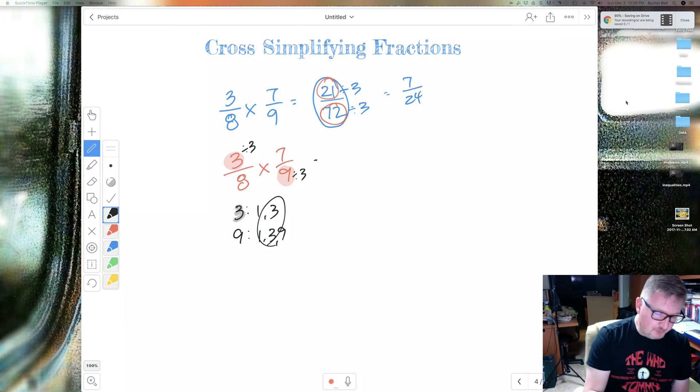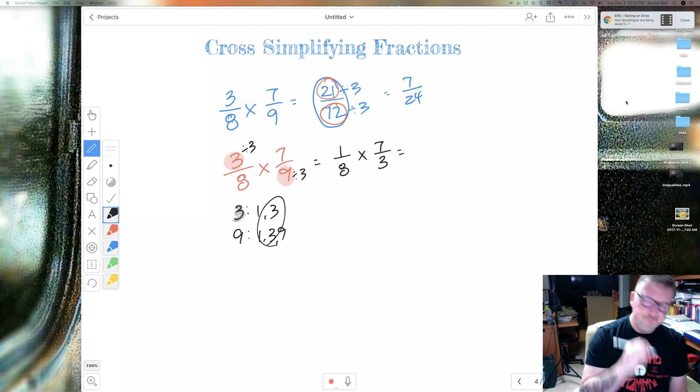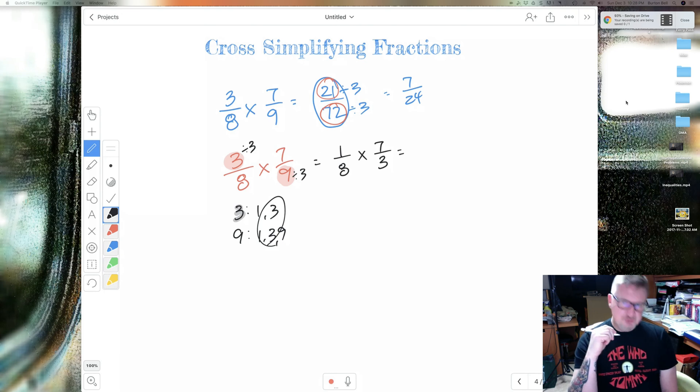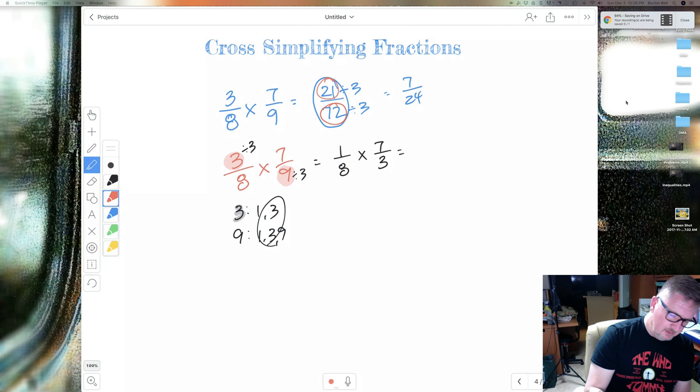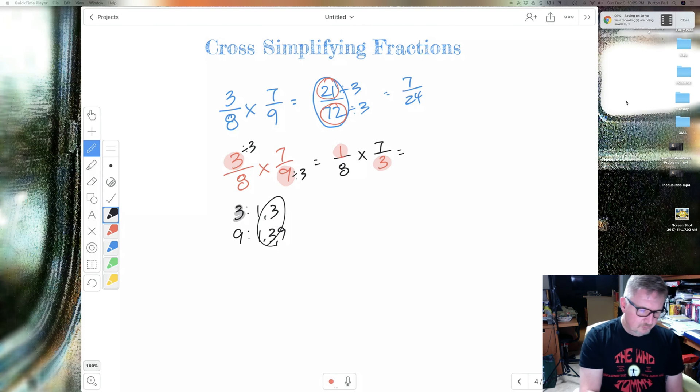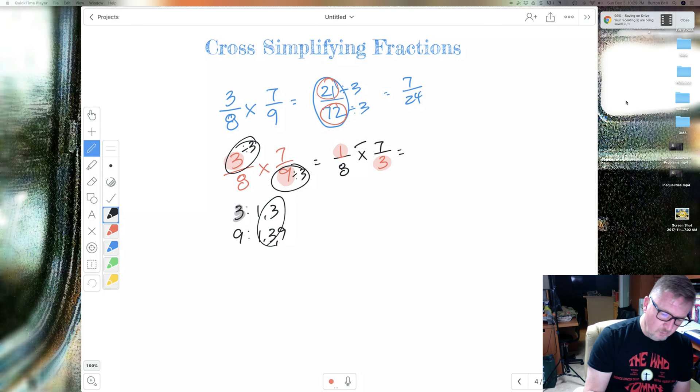And then I can probably just rewrite it. So 3 divided by 3 is 1 over 8 times 7 over 9 divided by 3 is 3. So I hope you see what I did here. This is the answer to this division problem and this division problem. Now I just multiply. 1 times 7 is 7. 8 times 3 is 24.